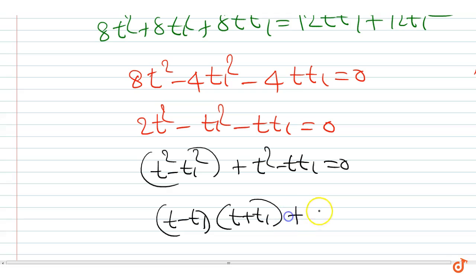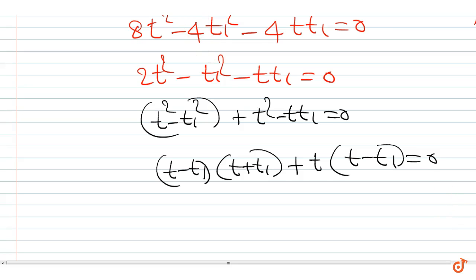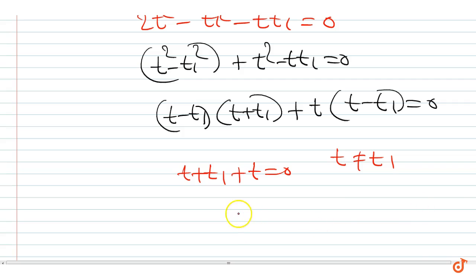Factoring, we get t plus t1 into 2t minus t1 equal to 0. Since t cannot equal t1, it requires that 2t plus t1 equal to 0. That is, t is equal to minus t1 by 2.